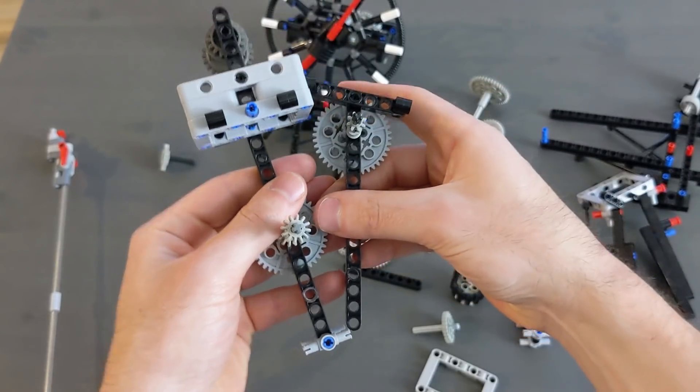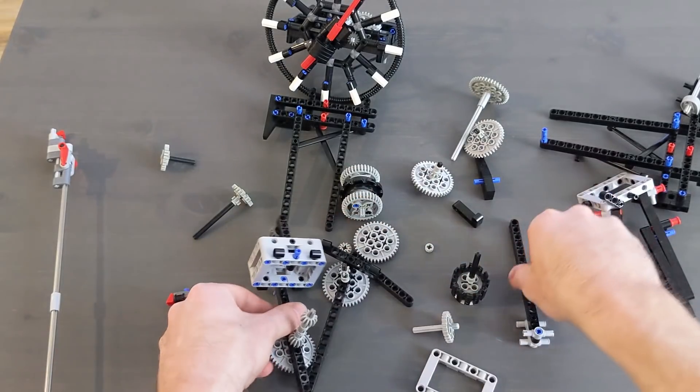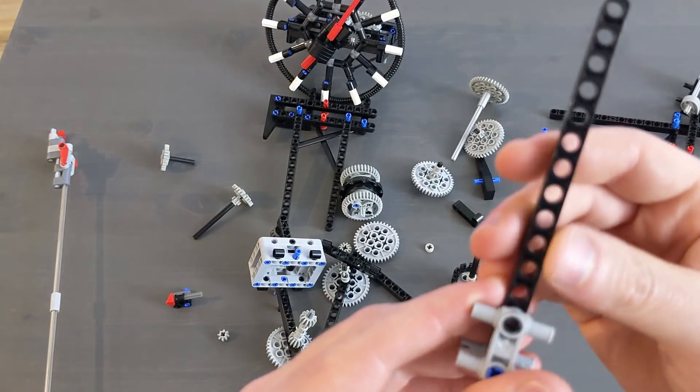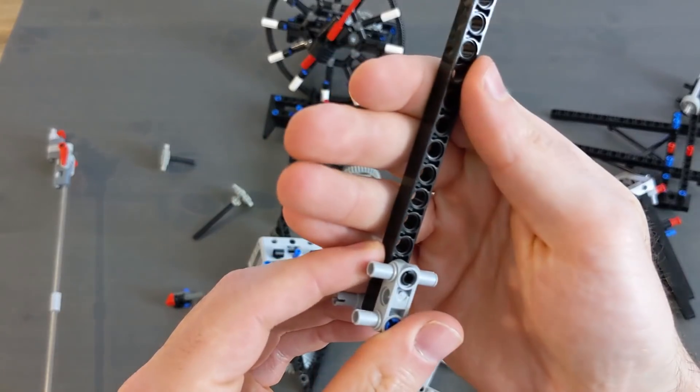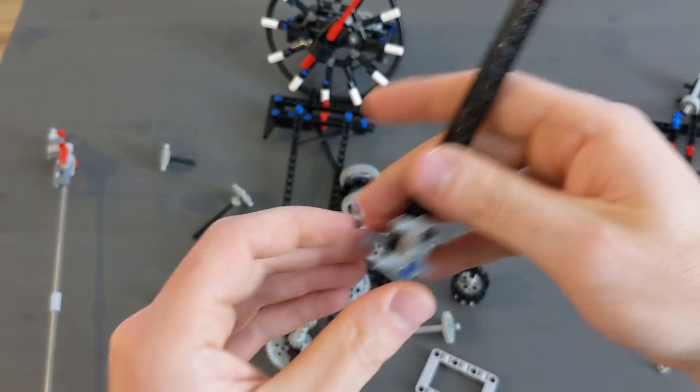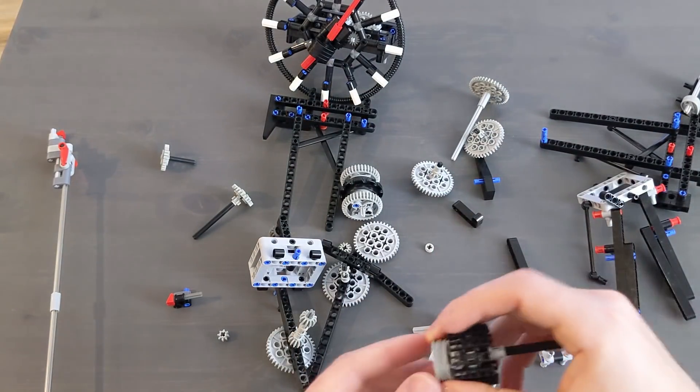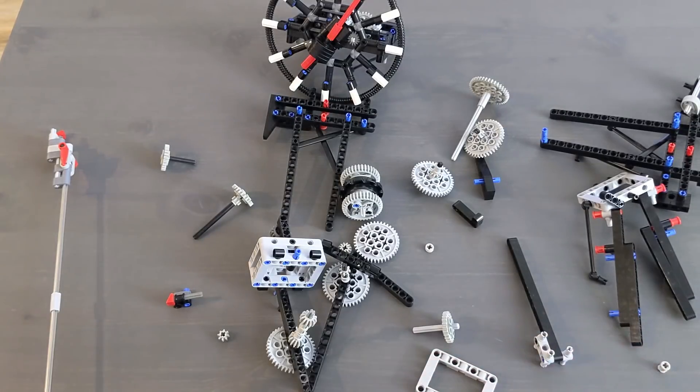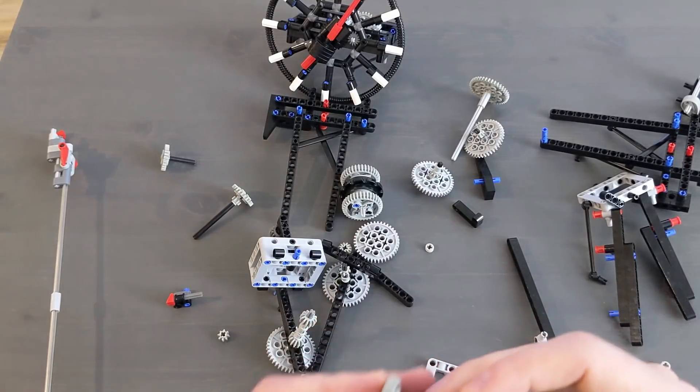So the freewheel axle is pretty interesting. It passes through three beams. This third beam, there's not really any sign of wear at all on this one. But the freewheel axle is not a solid axle all the way through. So when it's constructed, it looks something like this.